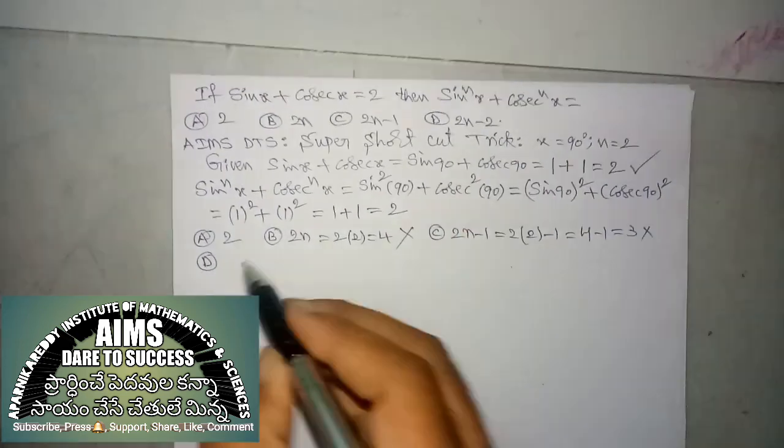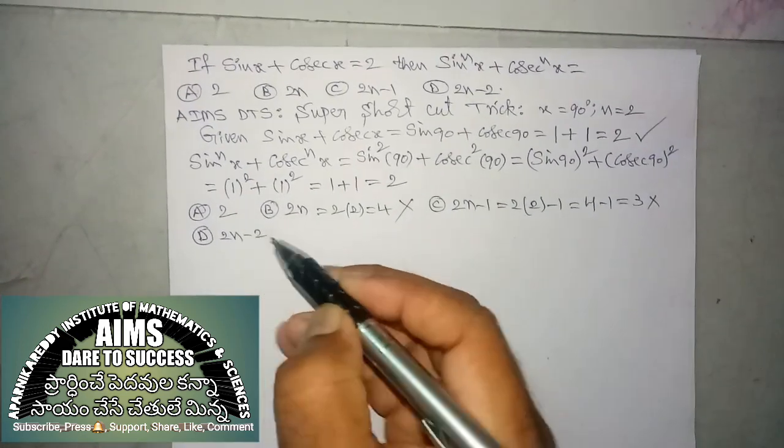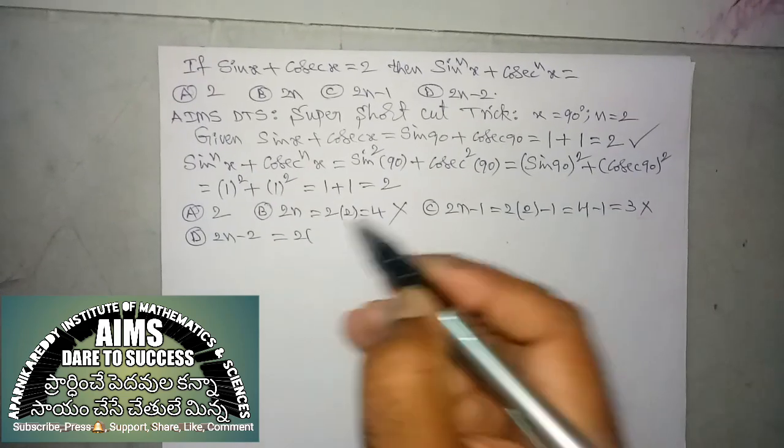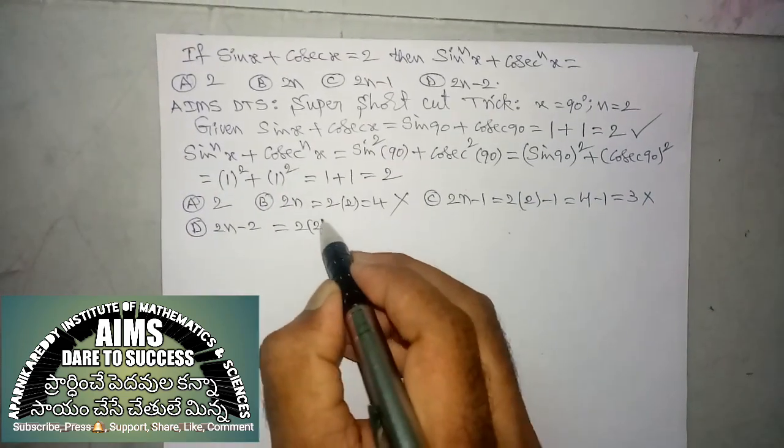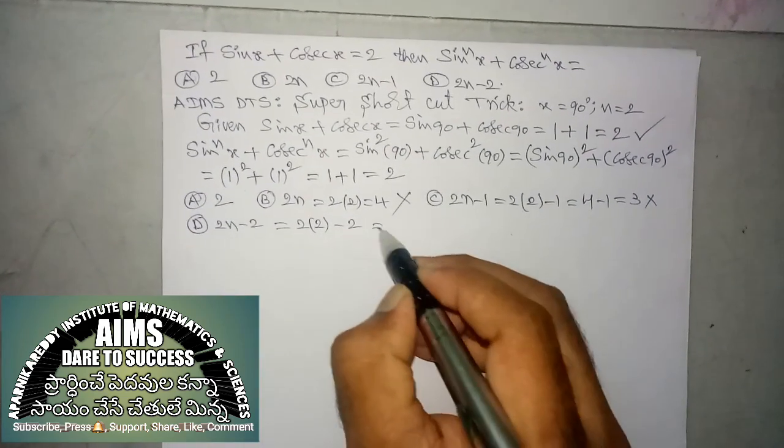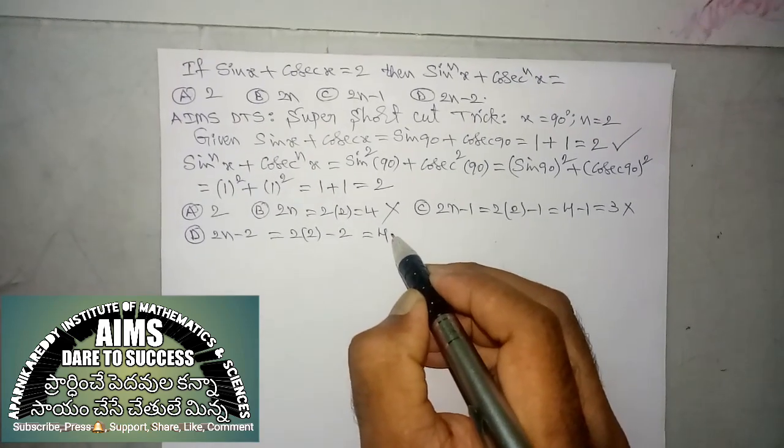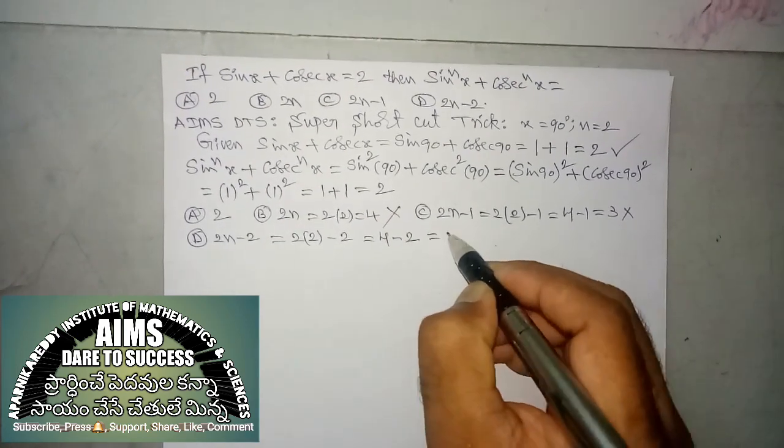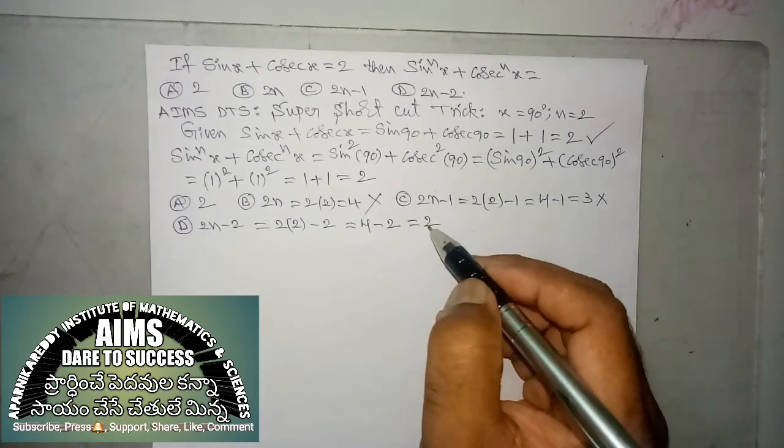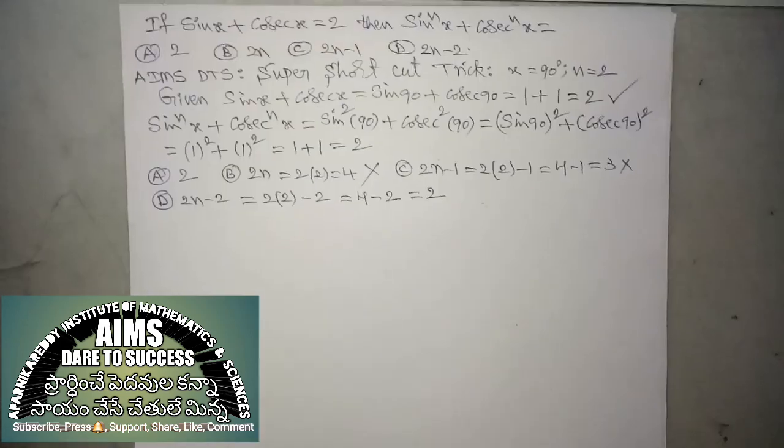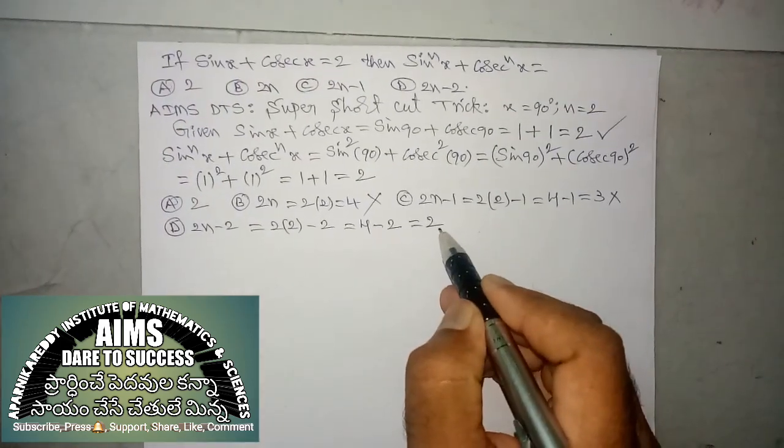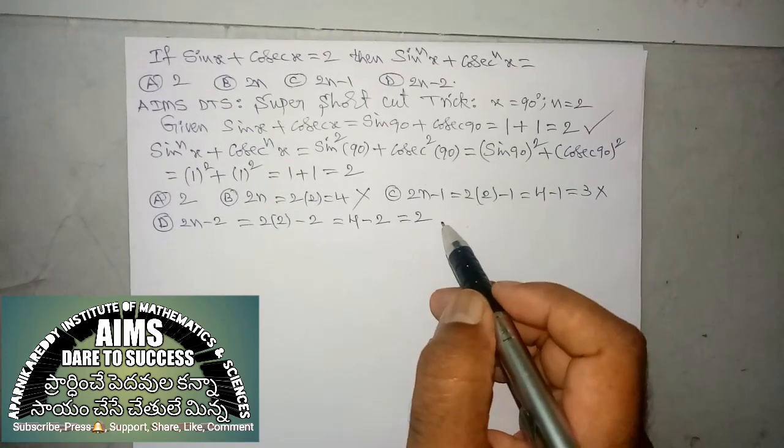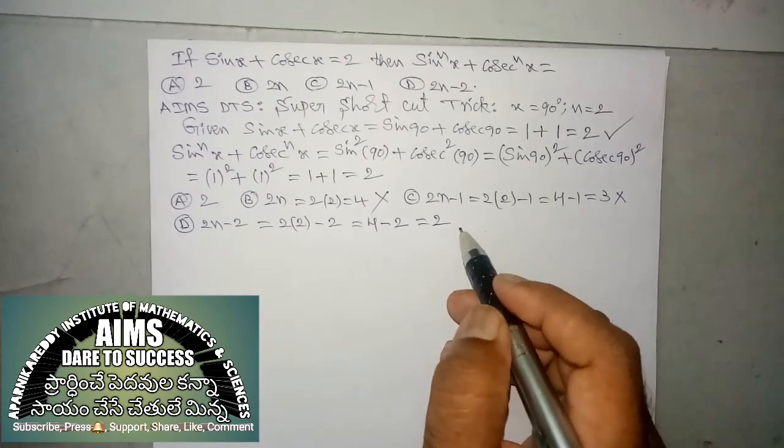Next option D, 2n minus 2 is equal to 2 into n value 2 minus 2. 2 to 0, 4 minus 2. 4 minus 2 is 2. So, here we are getting option D also same option.